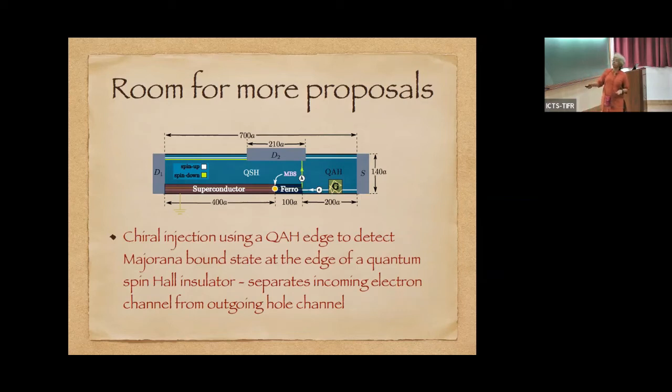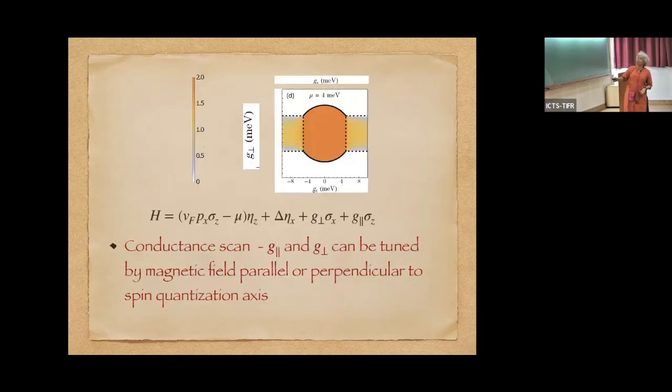And in this context, we have recently done some work on having a 2D model where we have a quantum spin Hall system with the spin up and spin down electrons and a quantum anomalous Hall system. And we are trying to look for chiral injection in such a model to look for the Majorana bound state at this edge. And what we find is we can get a two dimensional conductance scan. We have two parameters which can be tuned by a magnetic field parallel or perpendicular to the spin quantization axis. So at least it gives us a 2D kind of a picture to get more conclusive evidence we feel if we can do some experiments of this kind.